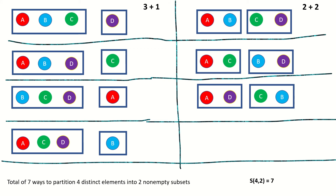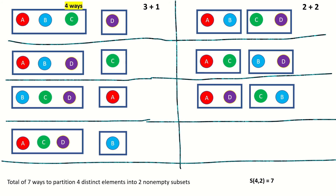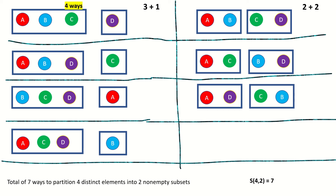In our example, there were two different configurations of subsets: 3+1 and 2+2. There were four ways of partitioning our elements according to the integer partition 3+1=4, and three ways according to the integer partition 2+2=4. That is the difference between asking the number of ways to partition a set of n distinct elements into k non-empty subsets, versus asking for partitions according to a specific integer partition.